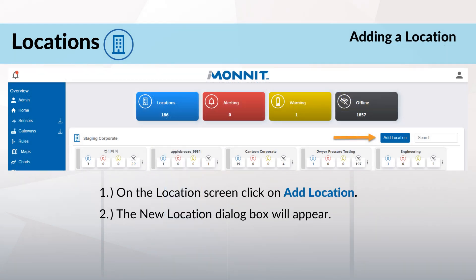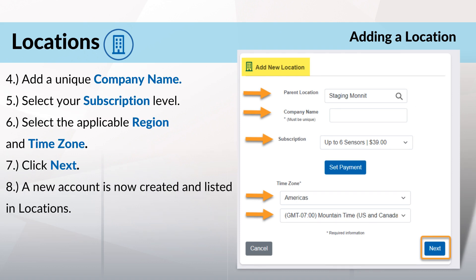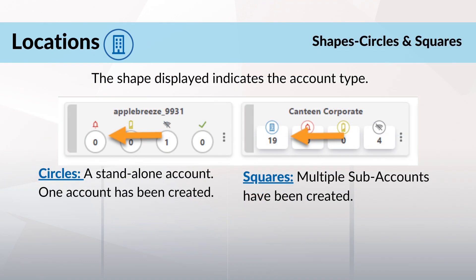Adding a location: on the location screen, click on 'add location.' The new location dialog box will appear. If this is your first subaccount, the parent location will populate the account name. If this is a multiple subaccount, you can search for previous company names to assign as a parent location. Assigning a parent determines where your new subaccount and tiers live. Add a unique company name, select your subscription level — note all new accounts are offered a 45-day free premiere trial — then select the applicable region and time zone and click next. The new account is now created and listed in locations. Shapes are added to account cards to easily identify if the subaccount is standalone or multiple-tiered: circles mean a standalone account, and squares mean multiple subaccounts have been created.